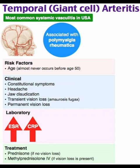Permanent vision loss can also occur. On laboratory workup, you will find high ESR and high CRP. Treatment of temporal giant cell arteritis is prednisolone if there is no vision loss, and methylprednisolone IV if vision loss is present.